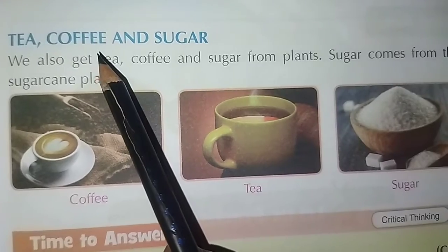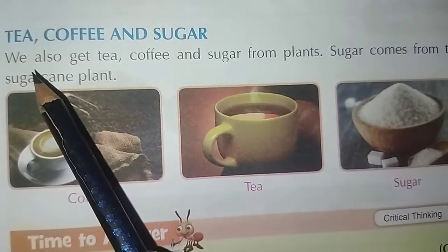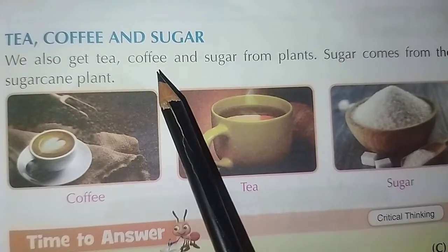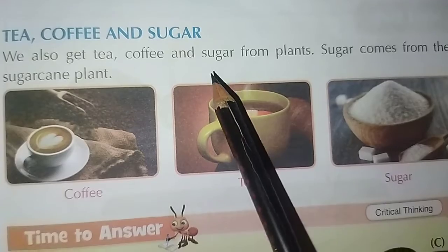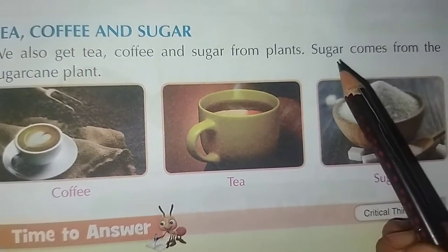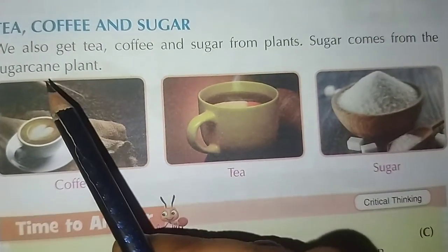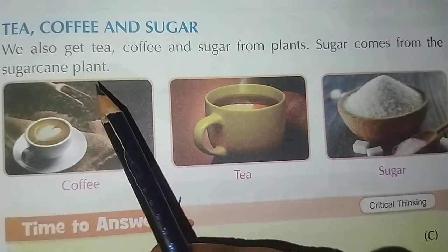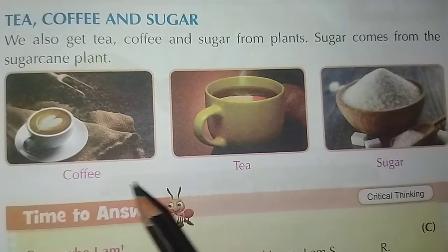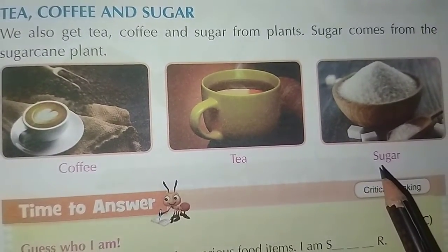Tea, coffee and sugar. We also get tea, coffee and sugar from plants. Sugar comes from the sugarcane plant.